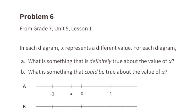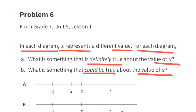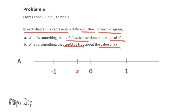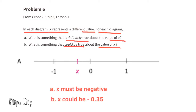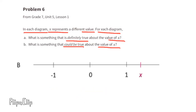Problem number six: In each diagram, x represents a different value. Part a: x is marked to the left of zero, so x must be negative. Since x falls between 0 and negative 1, and looks a little less than halfway, x could be negative 0.35. Part b: x is to the right of zero, so x is positive and looks less than 1.5; x could be 1.4.